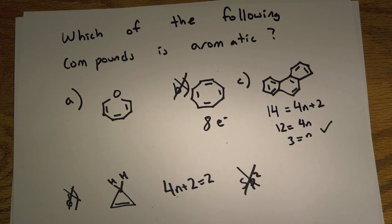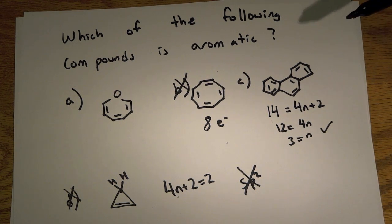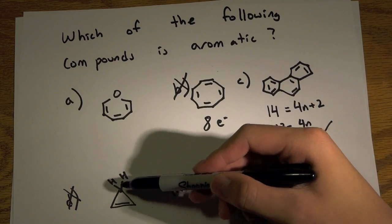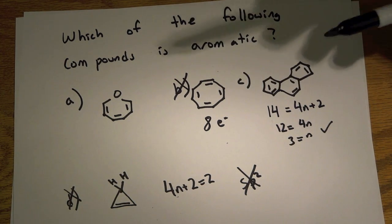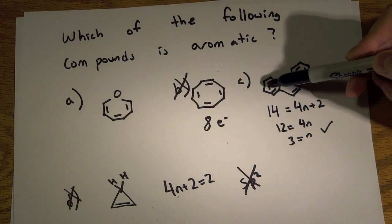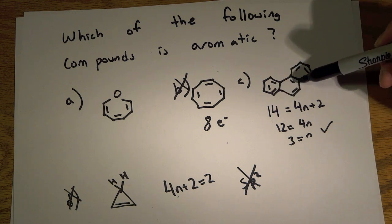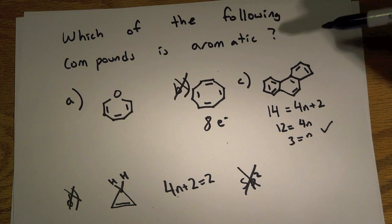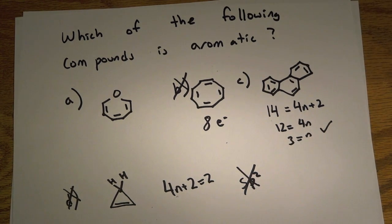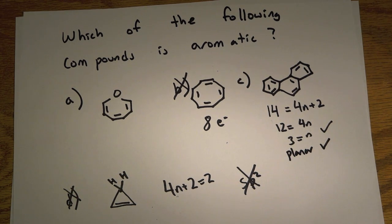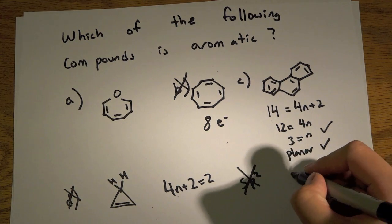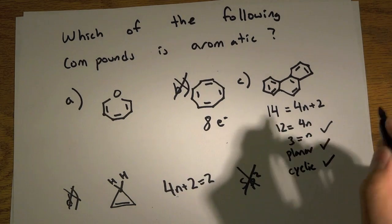Is it planar? We have to make sure everything only has 3 things coming out of it — no carbons with 4 bonds. A good way to check is that if a carbon is connected to a double bond at least once, it's okay. Going through: here is fine, here is fine, here is fine, here is fine — everything checks out. So planar? Yes. And is it cyclic? Yes, everything is in a circle.